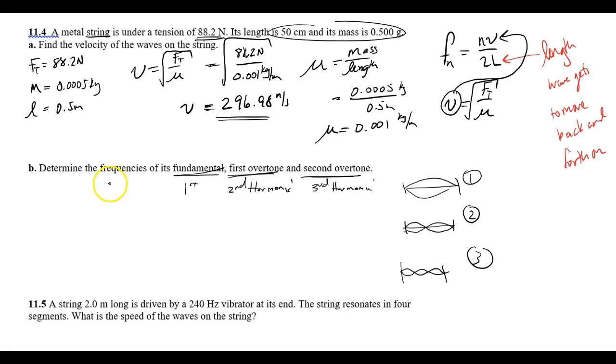So what I'm going to do is look at this formula here. F1 is equal to V all over 2L, because 1 times V is just V. I know the velocity now on a string is 296.98 meters per second. I'm going to divide that by 2 times the length. They're telling me the length in this case is 0.5 meters. I'm assuming the entire length of the string is used, unless I'm told otherwise.